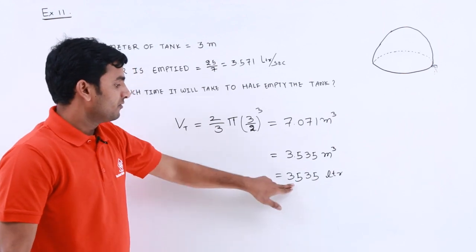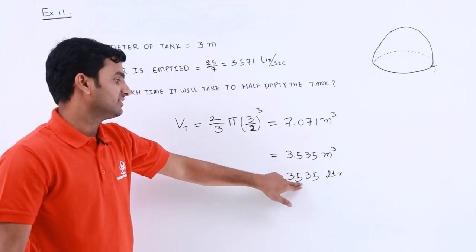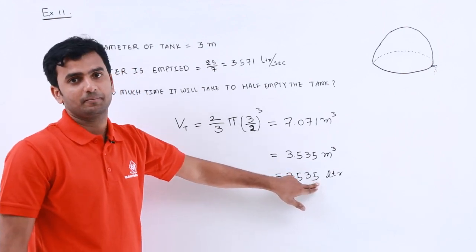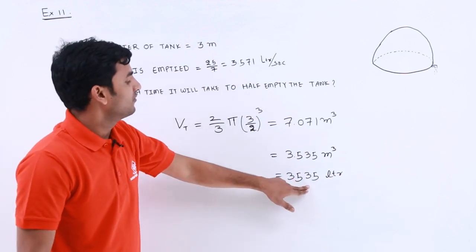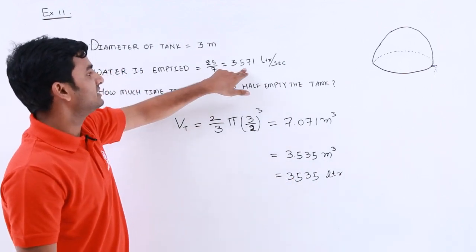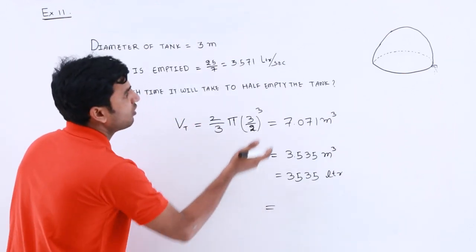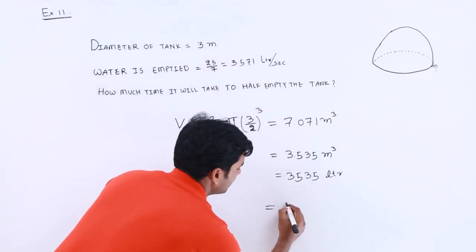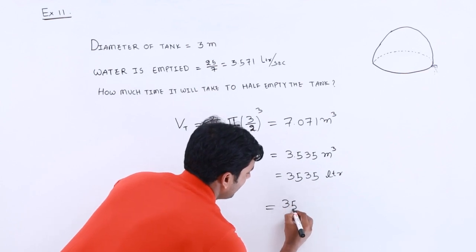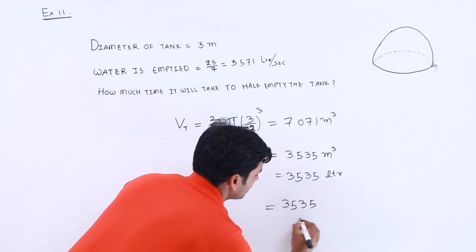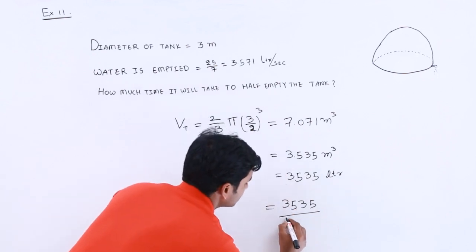For 3535 liters, how much time it will take? To find out that, we have to divide this portion with 3.571. So the time taken to half empty the tank will be 3535 by 3.571.